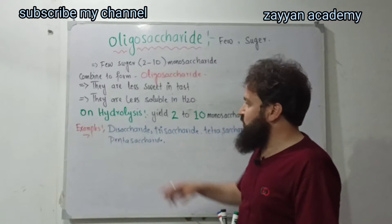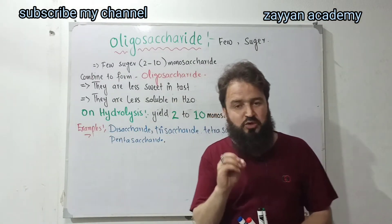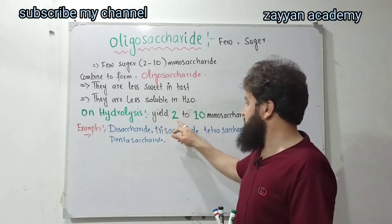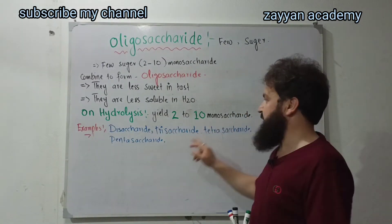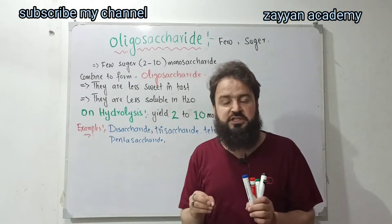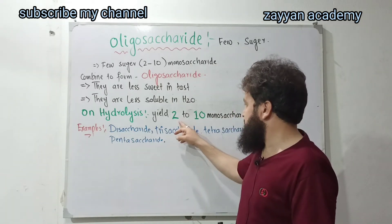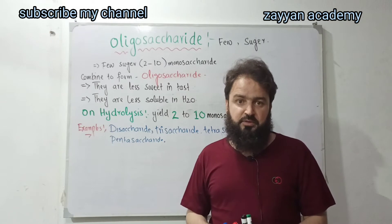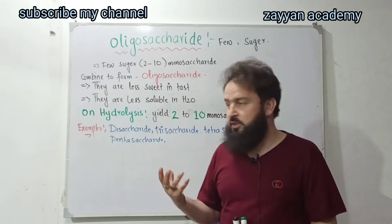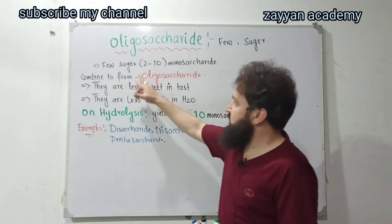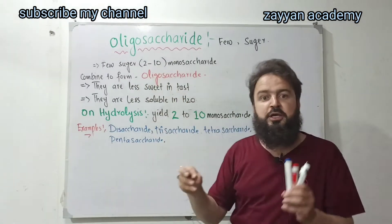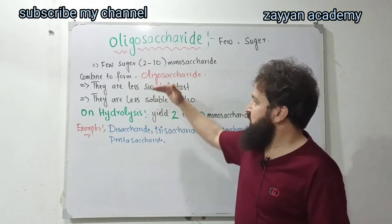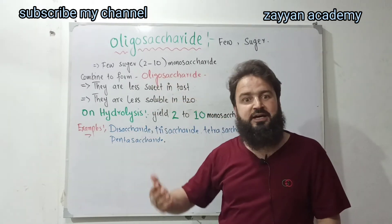What is hydrolysis? Hydrolysis yields 2 to 10 monosaccharide units. That means 2 to 10 monosaccharide units combine, and the large molecule formed is oligosaccharide.